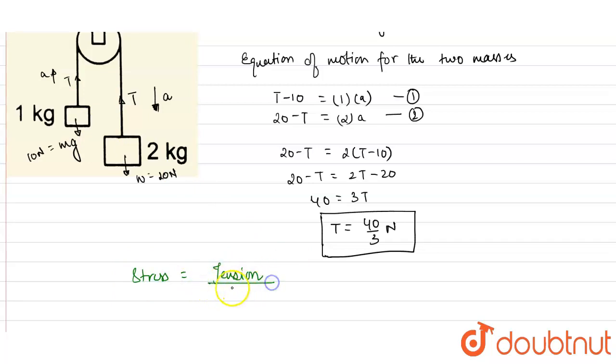Stress = tension upon the area of cross section. The tension we have calculated as 40/3 newtons, and the area of the cross section will be πr².